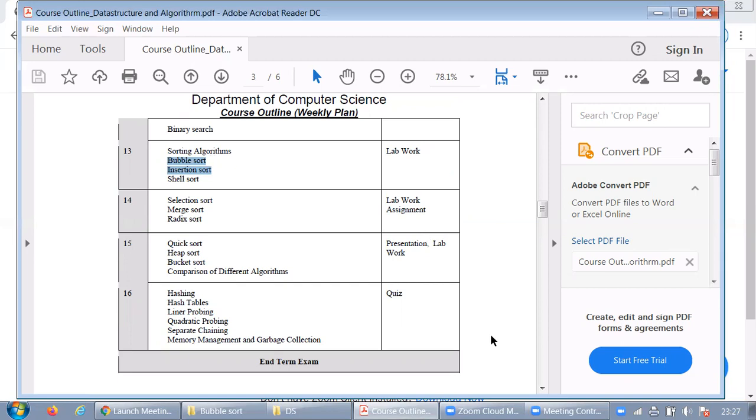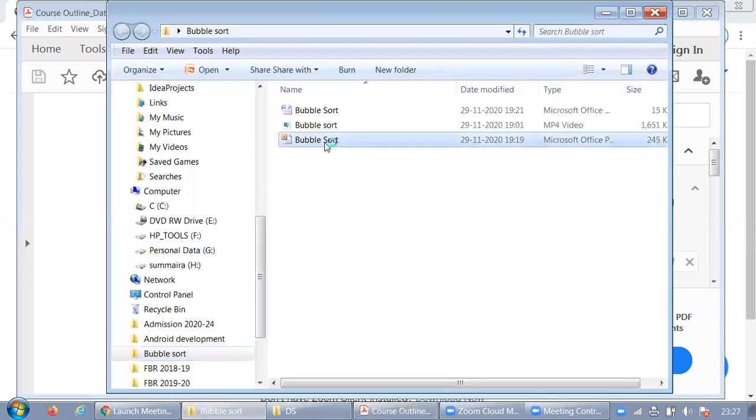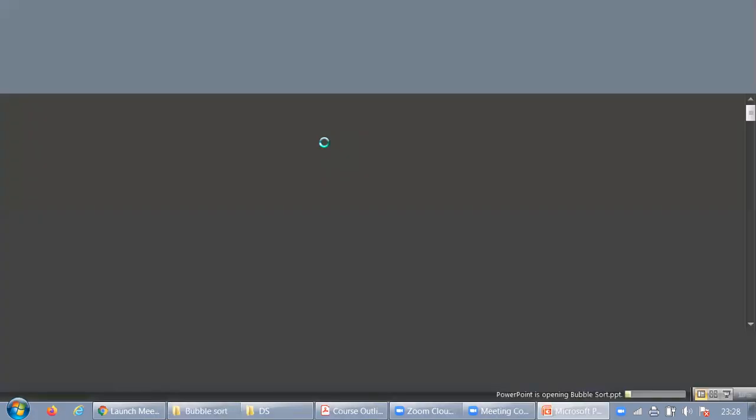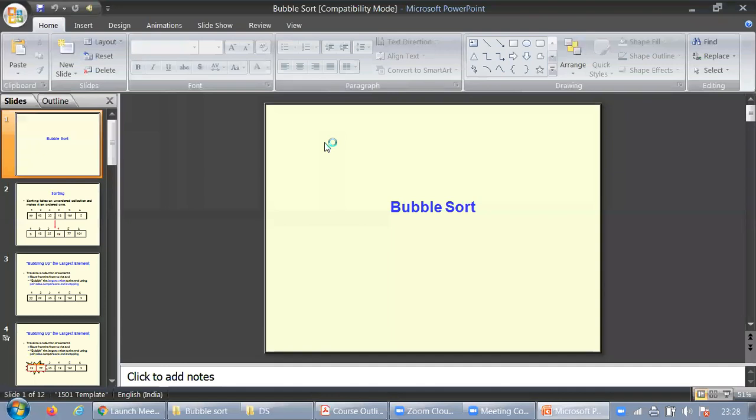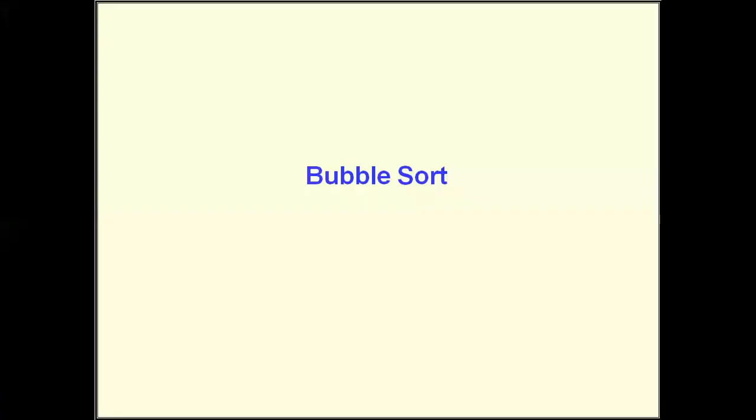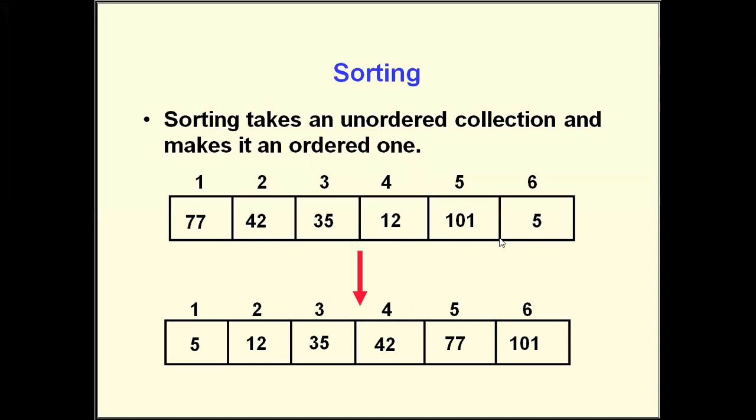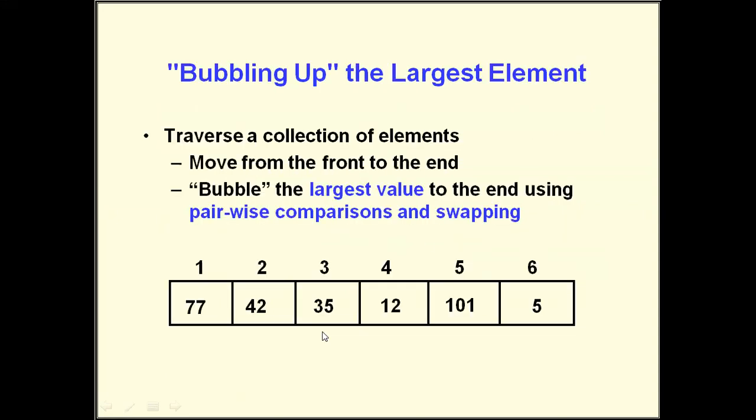So in the name of Allah, let's start properly. Let's start the Bubble Sort. You will remember that I have shared with you an activity in the class in which you will have two numbers. As you can see, you have an input array in which you have 77, 42, 35, 12, 101, and 5. After you start the Bubble Sort, it will come in this form. What was the mechanism?